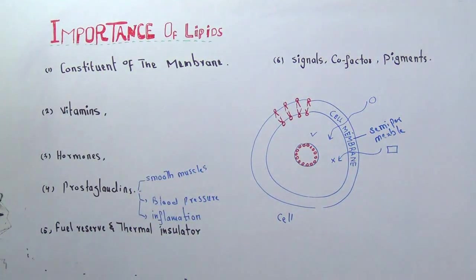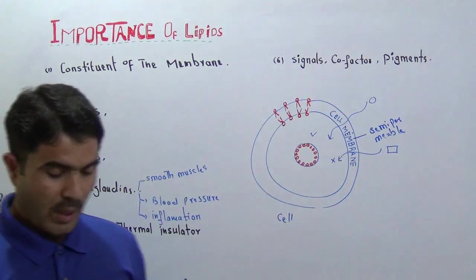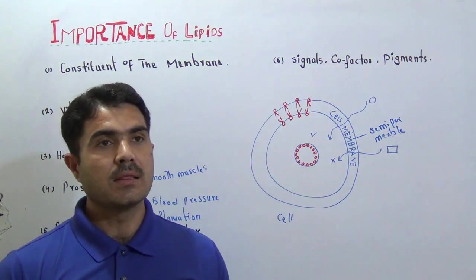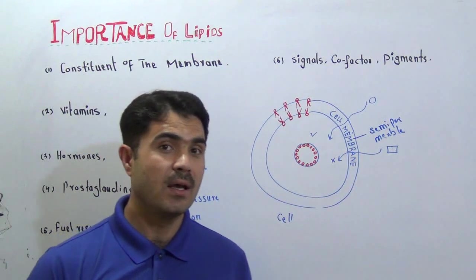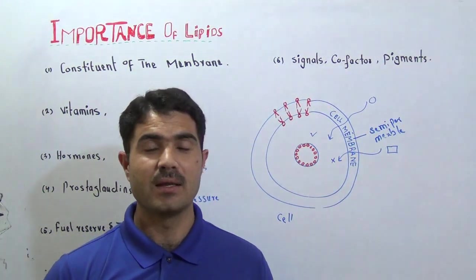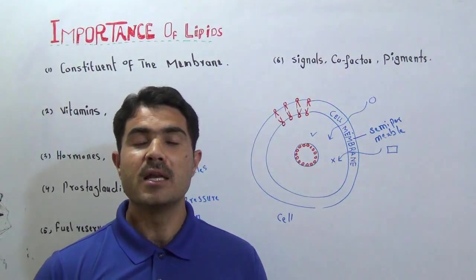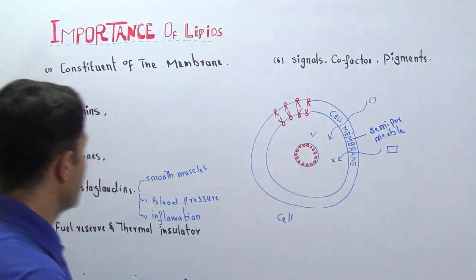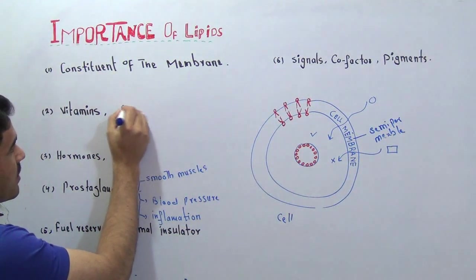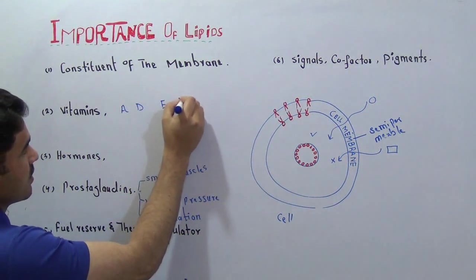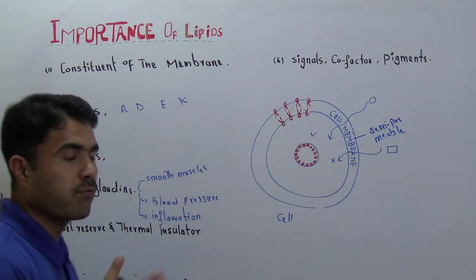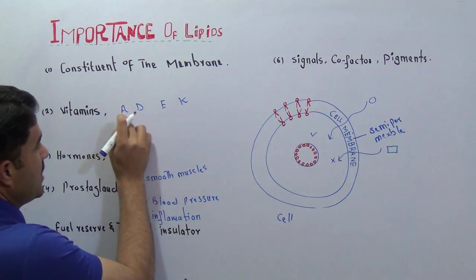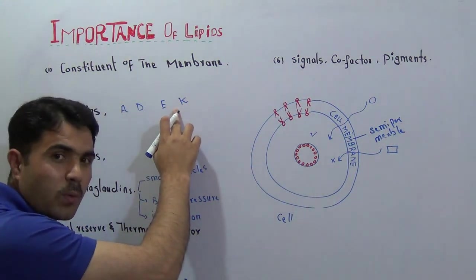Now come to the second: vitamins. Vitamins are an essential part of the living body. There are two main types of vitamins: water soluble and lipid soluble. Lipid-soluble vitamins are very important from the lipids point of view because we have vitamin A, vitamin D, vitamin E, and vitamin K. These four vitamins are fat-soluble vitamins and are also derived from lipids; they are made from lipids.